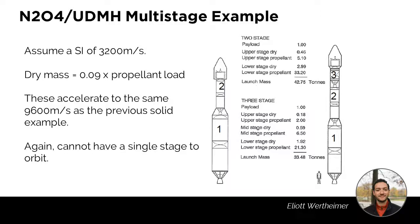Now let's look at a multi-stage liquid launcher using nitrous oxide and unsymmetrical dimethylhydrazine as fuel. Here are two examples: a two-stage rocket and a three-stage rocket, with all their characteristics shown on screen. We assume a specific impulse of 3,200 m/s and a dry mass of approximately 9% of the propellant load. Conducting all the calculations, you will find that both rockets accelerate to the same 9,600 m/s as in the previous solid rocket example, successfully taking their payload to low Earth orbit — which could never be done with a single stage.